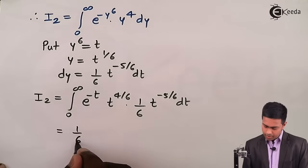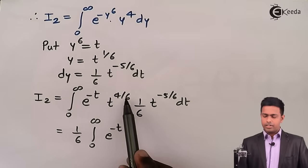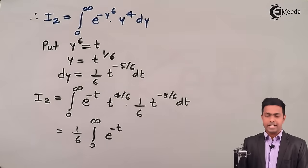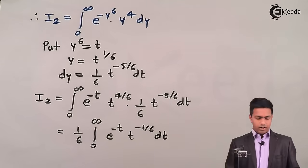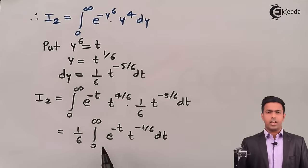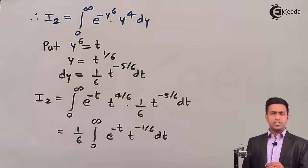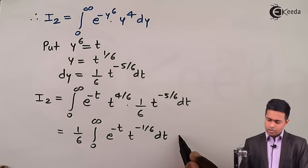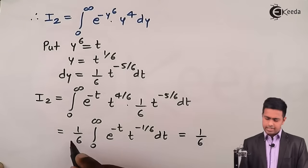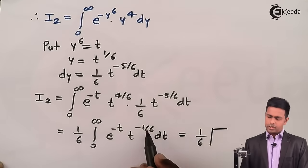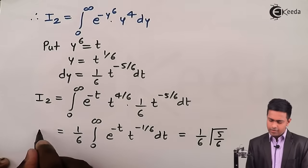Adding the powers for I₂: 4/6 + (−5/6) = −1/6. So I₂ = (1/6) ∫₀^∞ e^(−t) · t^(−1/6) dt. This again matches the gamma function definition. Adding 1 to the power: −1/6 + 1 = 5/6. Therefore I₂ = (1/6) · Γ(5/6).